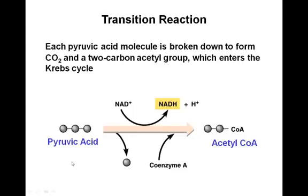In the transition reaction, we start with pyruvic acid generated from glycolysis. Each pyruvic acid molecule is broken down to form CO2 and a two-carbon acetyl group, which enters into the Krebs cycle. It's a separate reaction occurring prior to the Krebs cycle. You need to input coenzyme A — pyruvic acid interacts with coenzyme A and gets a CoA tag, giving you the name acetyl-CoA, which feeds into the Krebs cycle.